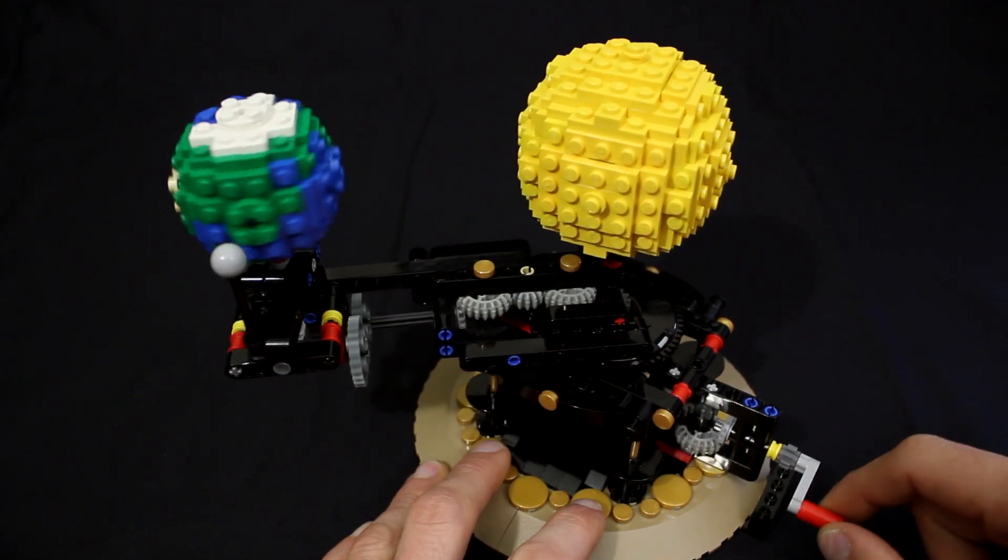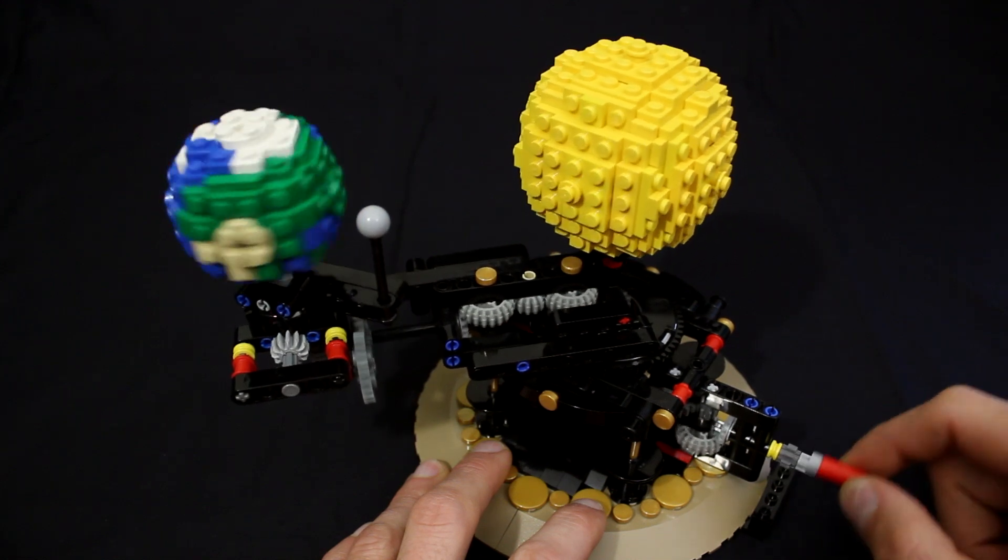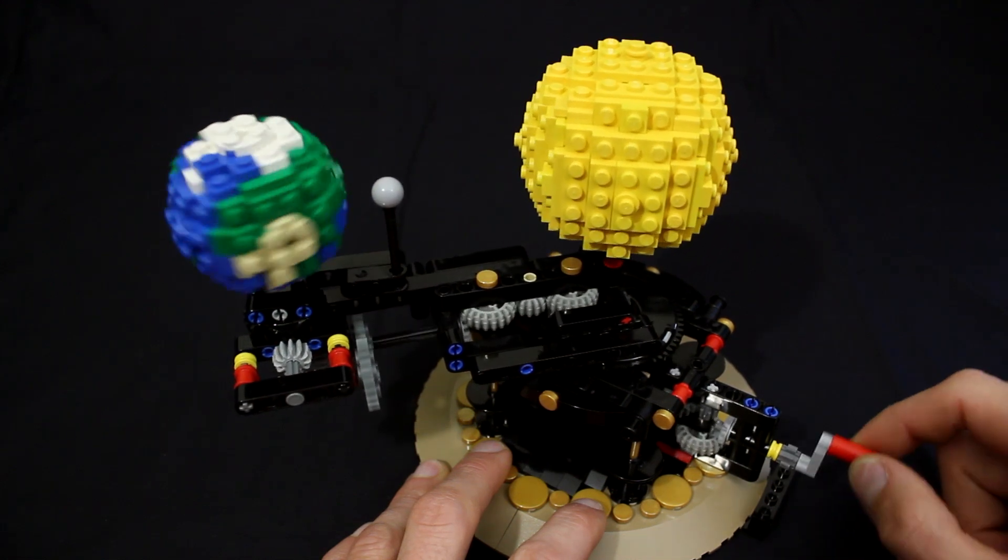The moon in this model rotates around the earth once every 28 days, which is fairly close to the 27.33 days it takes in real life.